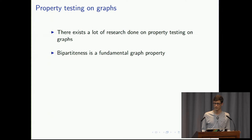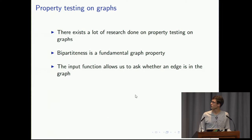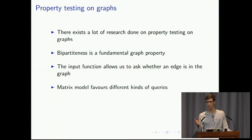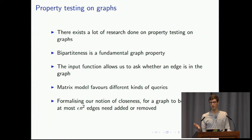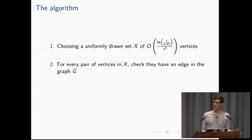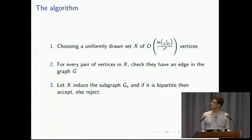Our input function will allow us to query whether an edge is in the graph or not. Given two vertices, we ask the input whether the edge is in the graph. It makes more sense to store the graph as an adjacency matrix, because then we have O(1) time to do the query — an incident list could take linear time in the worst case. We pick a set of vertices uniformly drawn from the input, check which edges between them are in the graph to induce a subgraph, and check if it's bipartite. If it's bipartite, we accept; else we reject.